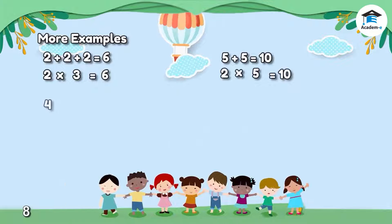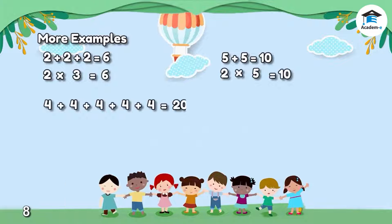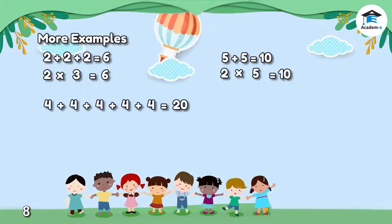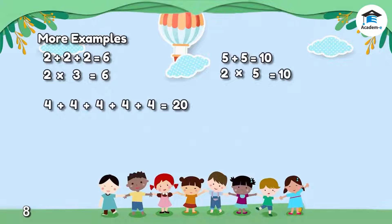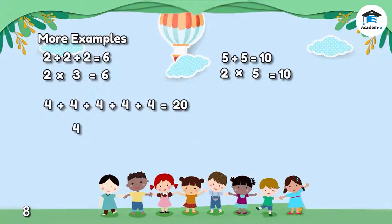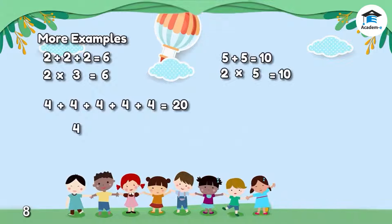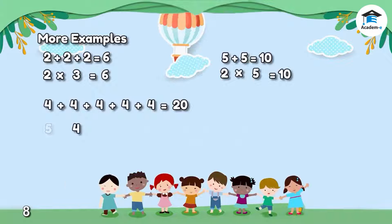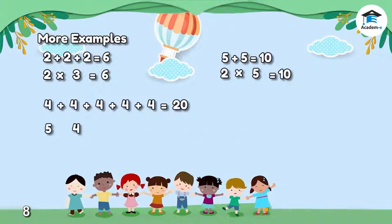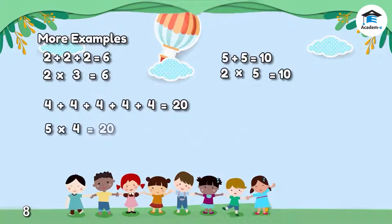The third example is 4 plus 4 plus 4 plus 4 plus 4, which gives us 20. We're going to add up a batch of 4s. Let's put 4 here. And how many 4s are we going to add up? 5. Let's put 5 here. In multiplication sentence, it is 5 by 4, and we get the product of 20.